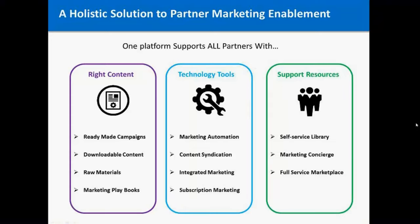Finally, providing your partners with support resources to make sure partners with different marketing capabilities know how to utilize the systems they have in place. With the self-service library, partners can access all the different content and tools they need and send it out at their own pace. With the marketing concierge model, programs can be fully managed and executed on behalf of your partners. If you have different tiers or groups of partners marketing for your various solutions, you can send out marketing on their behalf. And the full-service marketplace is where smaller, mid-tier, and large partners alike can shop and sift through accredited marketing agencies to get a customized marketing campaign executed on their behalf.